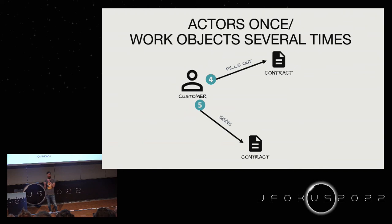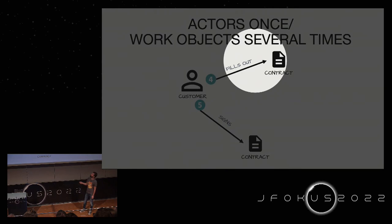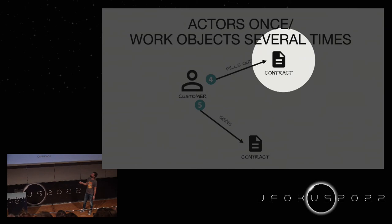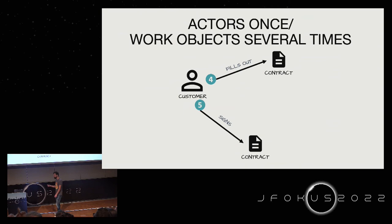There's one thing that looks strange at first but makes sense once you get used to it: every actor appears only once in a picture, while work objects typically appear several times. For example, in step four the customer fills out the contract, and in step five the customer signs the contract — the same contract icon appears again. I'll show you later why this makes sense.